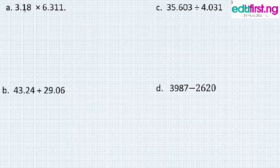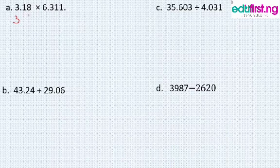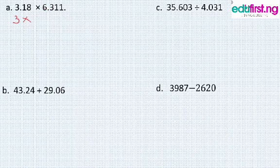That is, when we round down, we have 3. Then our operator is multiplication. The next one, the significant figure here is 6. Are we rounding up or rounding down?